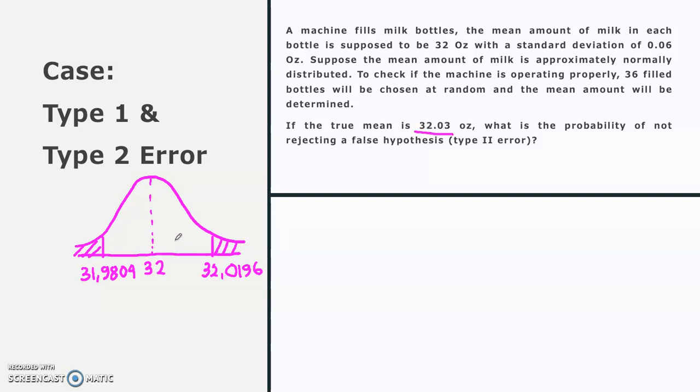So let's draw this condition. So this is the true mean, 32.03, and we know that this would be the rejection area, and this is the not rejecting area following from the first case. This is the not reject area.